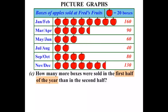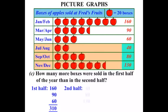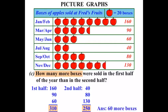Going back to the question, we're comparing the first half of the year with the second half. The first half: 160, 90, and 60. Adding them up, we get 310 boxes altogether. For the second half: 40, 80, and 130. Adding those up, we get 250. So how many more boxes? We're comparing 310 with 250 — we subtract to find the difference. The answer is 60 more boxes sold in the first half of the year.